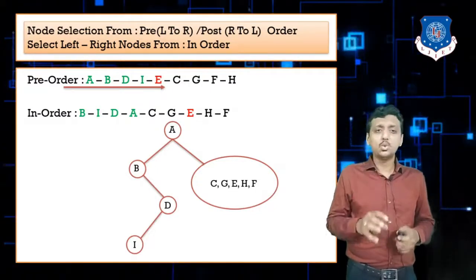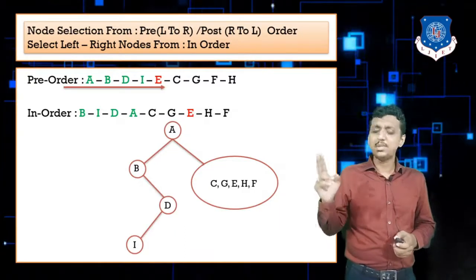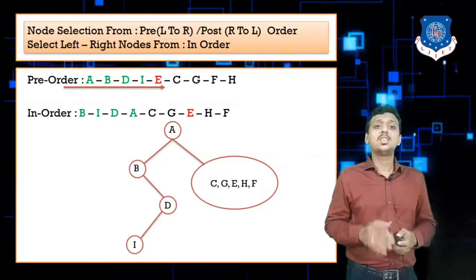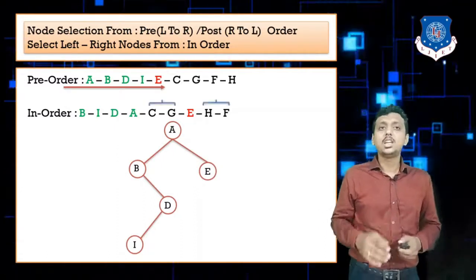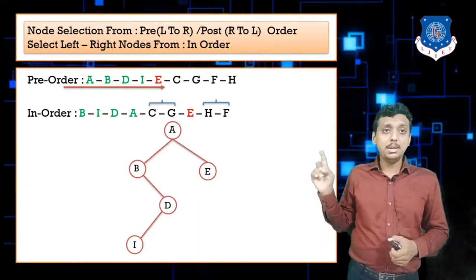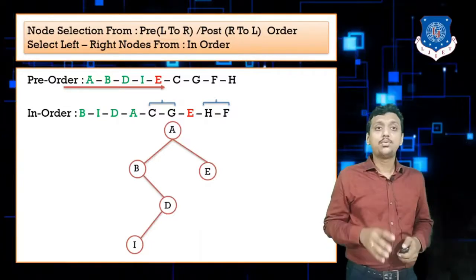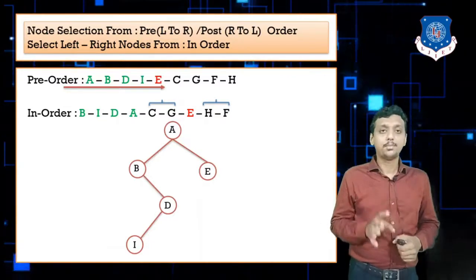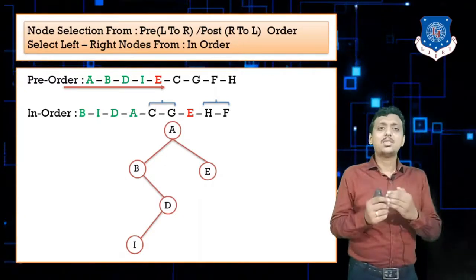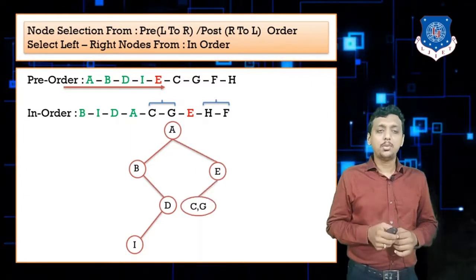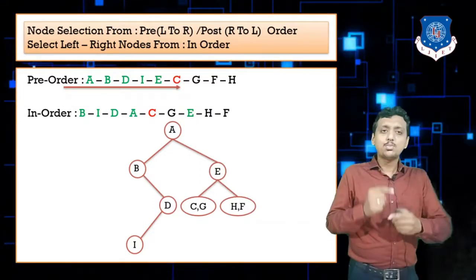Now we move to the right subtree. Checking pre-order, the next node is E. From the in-order subsequence C, G, E, H, F: the nodes already placed are removed. On the left side of E we have C and G, and on the right side we have H and F. So C and G go to E's left and H and F go to E's right.